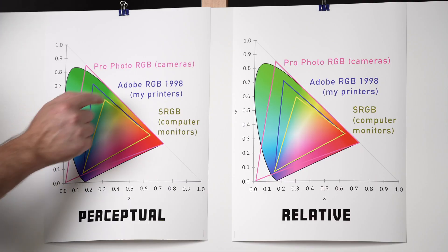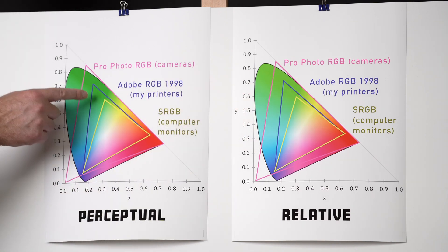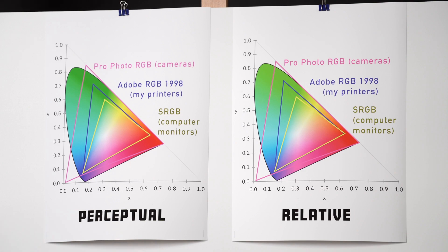But when you get up into Adobe, those greens are really quite a bit different. And that is what the actual green should look like. In this image, it's shifted because I printed it in perceptual.